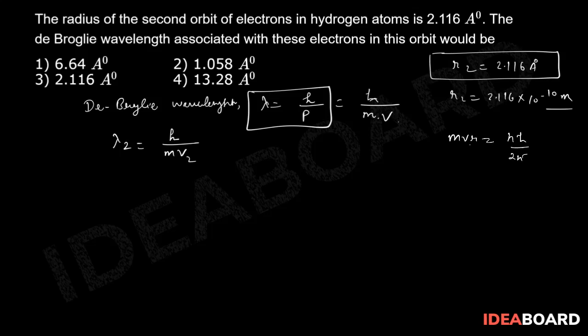We know the value of r, so from there we can write mv equals nh upon 2πr. If we know the value of v, then we can write v2 equals n equals 2 into h upon 2π into m into r2.